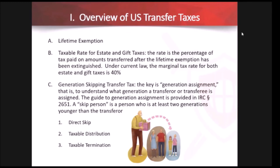There are three types of events that cause the GST tax: first, a direct skip — a direct gift or transfer to a skip person, anyone two generations or more below you or 37.5 years younger. Second, a taxable distribution, typically from a trust or estate to a skip person. Third, a taxable termination — when an estate or trust completely terminates and a distribution is made. The credit is applied and anything above that is subject to GST tax in addition to the normal estate tax.